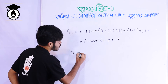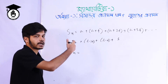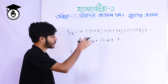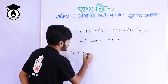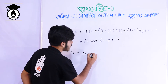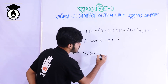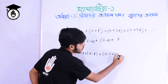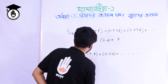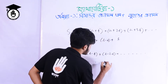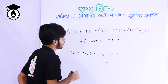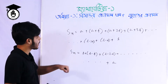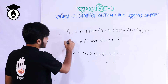The last term is l, and the term before it is l minus d. Then l minus 2d. So we are going to write the series in reverse: l, l-d, l-2d, continuing down to a.